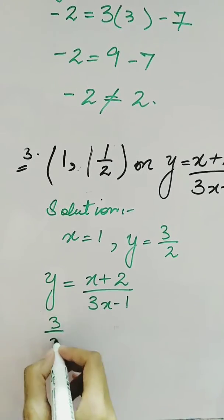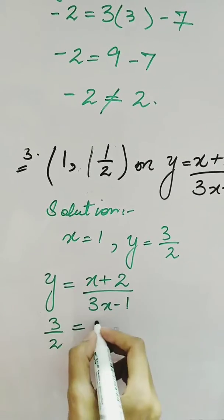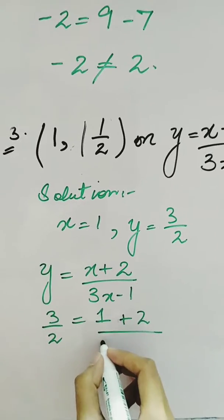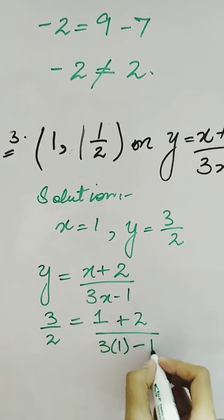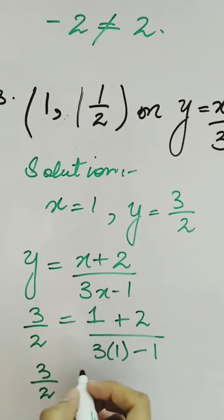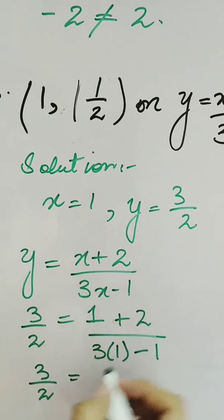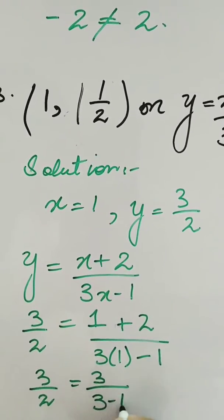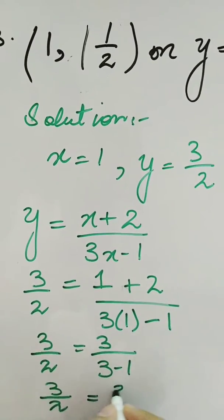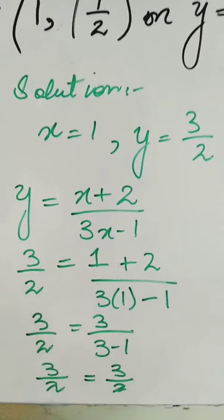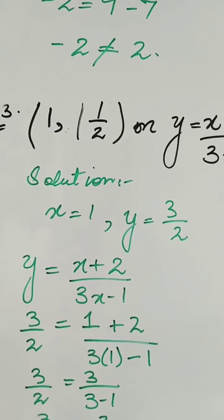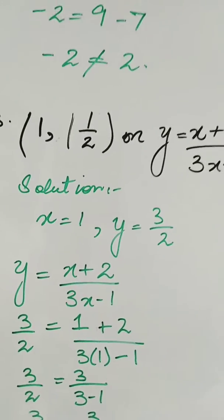Here, y = 3/2 and x = 1. So we get (1 + 2) / (3(1) - 1) = 3/2. We have 1 + 2 = 3 and 3 - 1 = 2, giving 3/2. The final answer is 3/2 = 3/2, which means that the given point satisfies the given equation — the given coordinates lie on the given line.